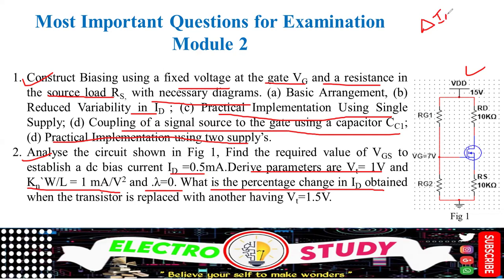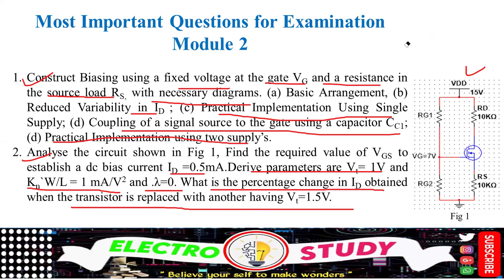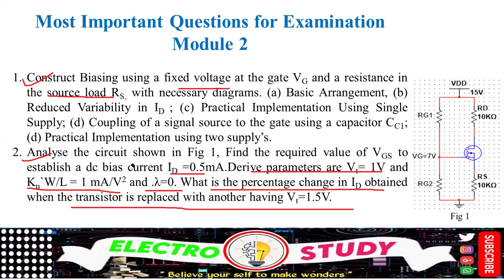You are informed to calculate delta ID with VT, obtained with the transistor replaced with another having VT equal to 1.5 volts. You should know the fundamental formula — the basic formula — and then you can easily solve it. These two questions are most important.